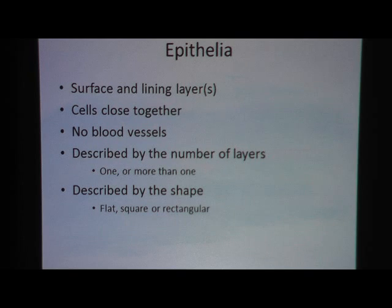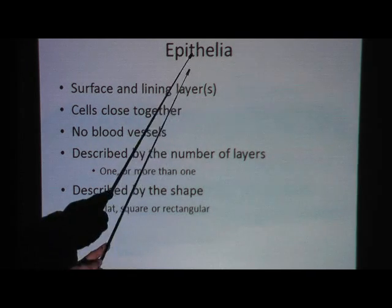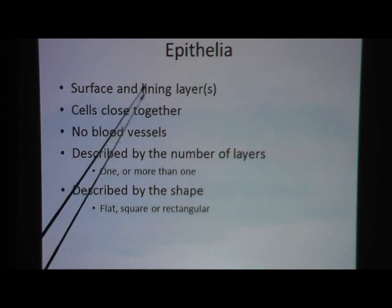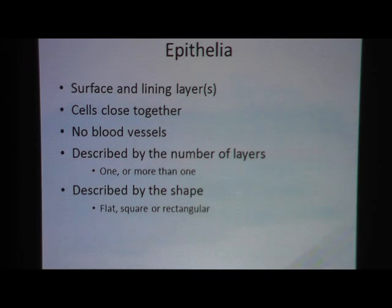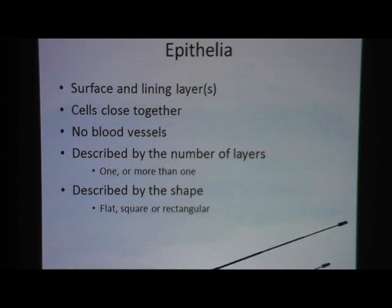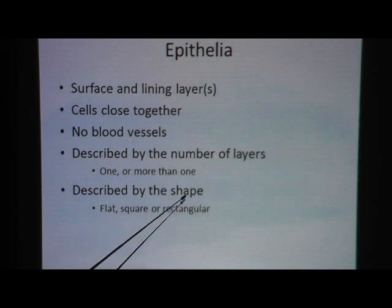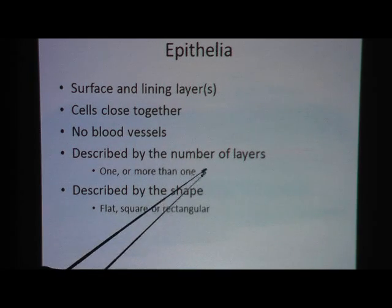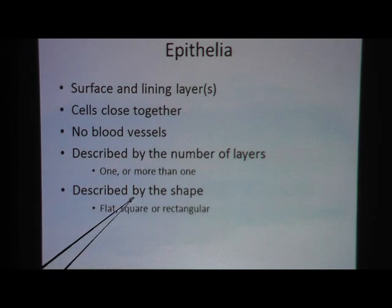Let's start with epithelial tissue. Epithelia is plural, epithelium is singular, epithelial is the adjective — same thing. By definition it has to be on the surface, because it's lining something — a layer of cells lining something. These cells are very close together, there are no blood vessels in them, and we name them with a two-part process: one part is the number of layers, and the other part is the shape of the cells.